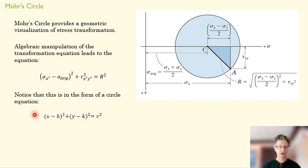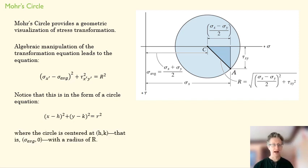Here's a standard circle equation. H and K are the coordinates of the center of our circle and R is our radius. So our circle is going to be centered at sigma average and zero, and it's going to have a radius of length R, which you may recognize is the equation for maximum in-plane shear stress.